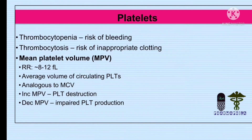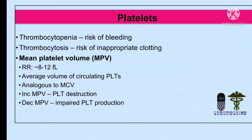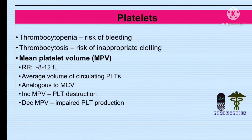Mean Platelet Volume, or MPV — its reference range is 8 to 12 femtoliters. It represents the average volume of circulating platelets, analogous to MCV for red blood cells, which we discussed in the RBC indices covering MCV, MCH, and MCHC. An increased MPV means platelet destruction, while a decreased MPV means impaired platelet production.